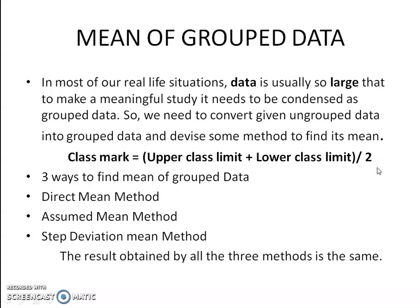And to find mean of grouped data, you have 3 different ways. These are the 3 different ways: Direct Mean Method, Assumed Mean Method, Step Deviation Mean Method. Even though you have 3 ways to find mean of grouped data, the result obtained by all the 3 methods is the same.